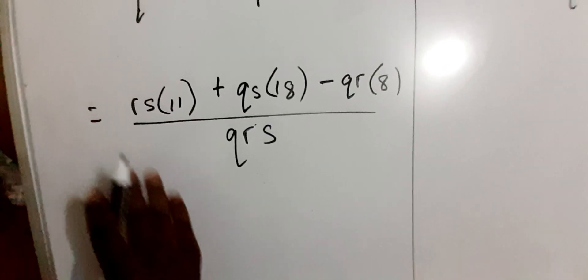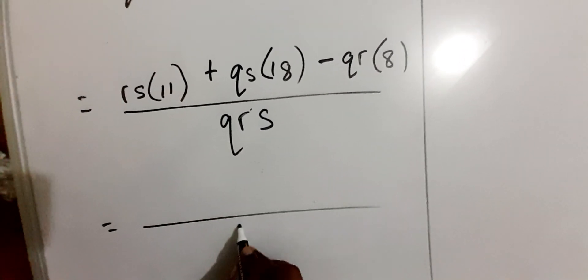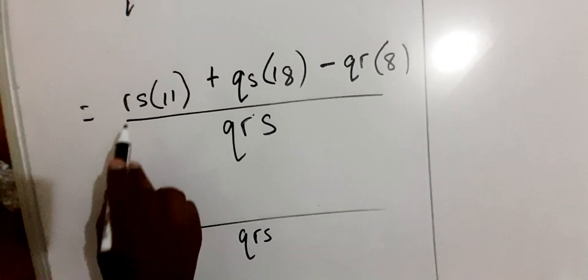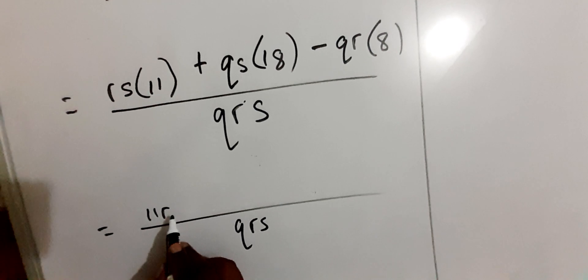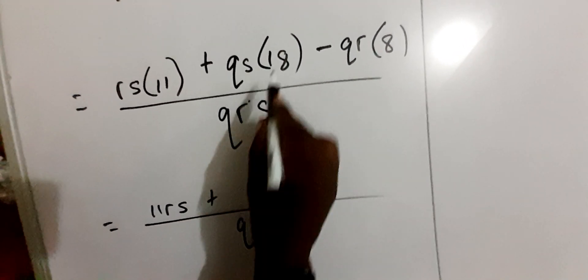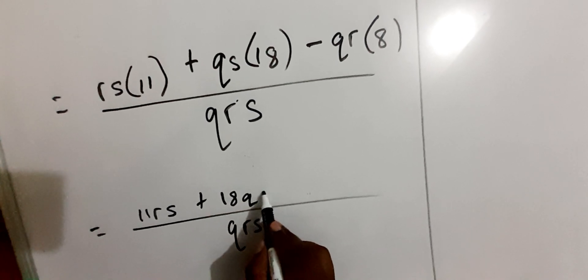now we get to focus on this layer. We are now going to say 11RS. In algebra, we start with numbers, then followed by the letters, plus 18QS